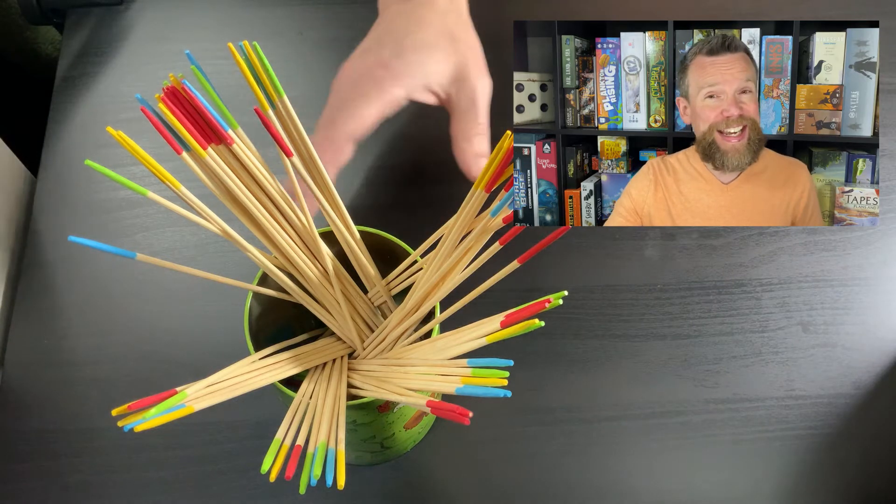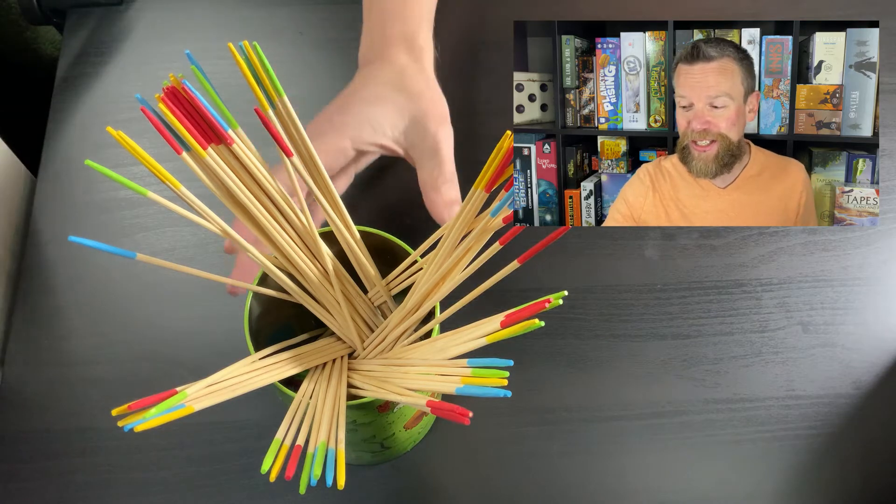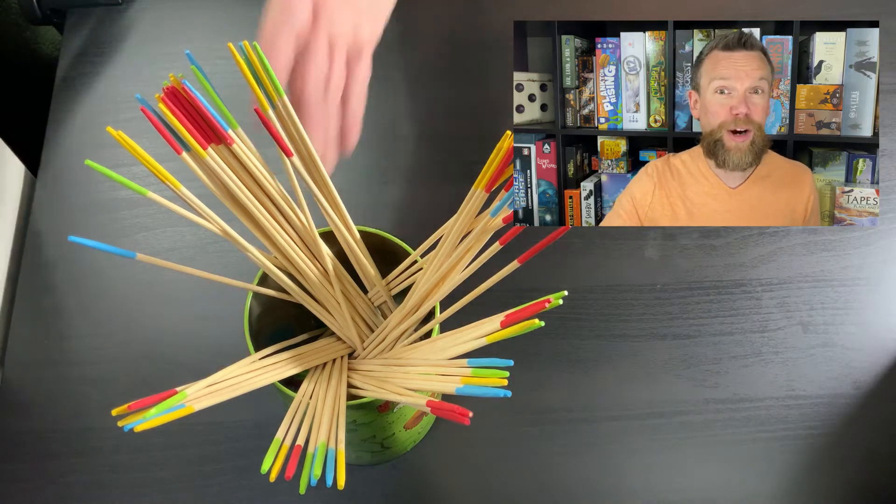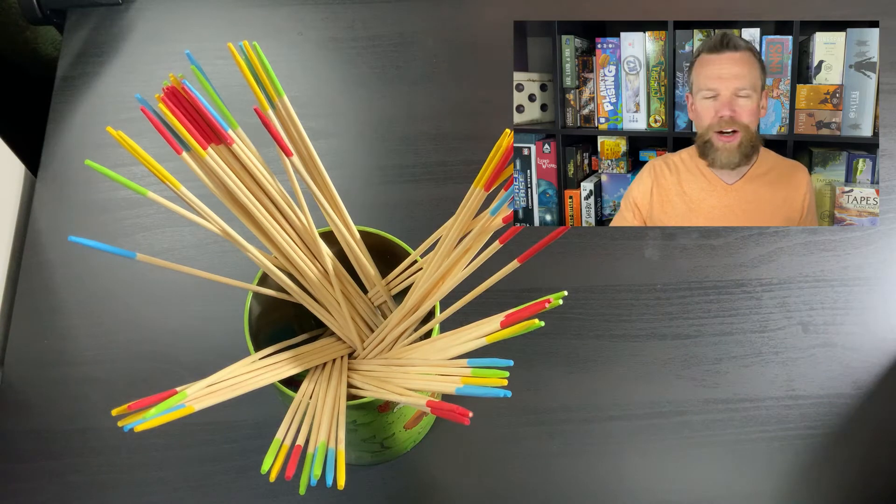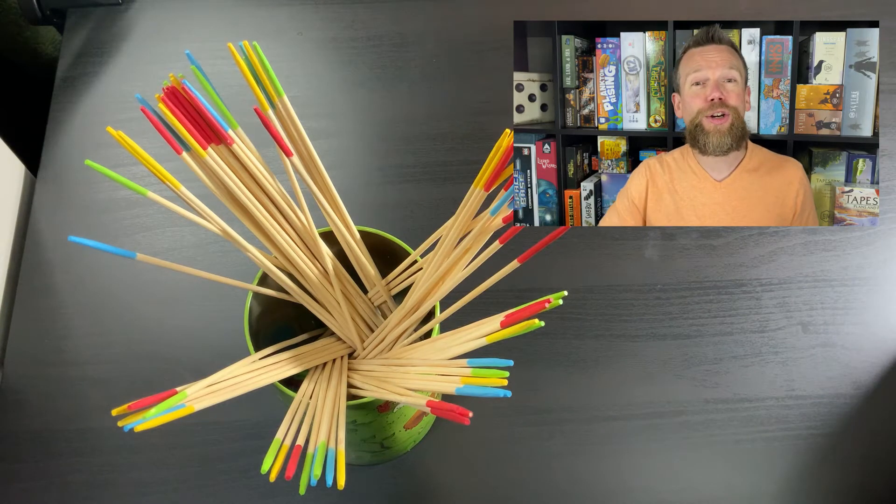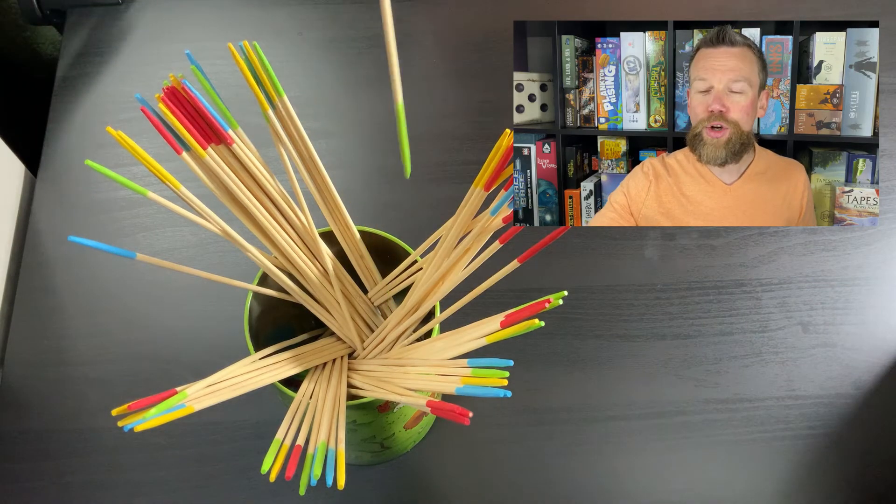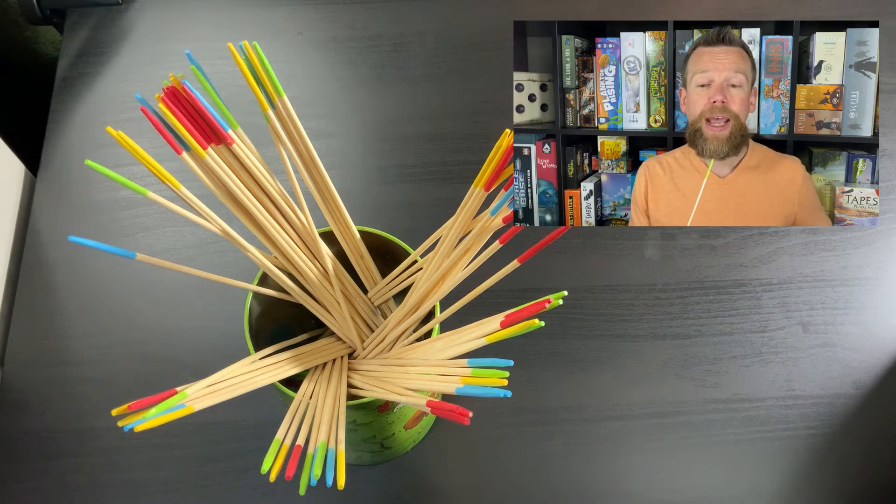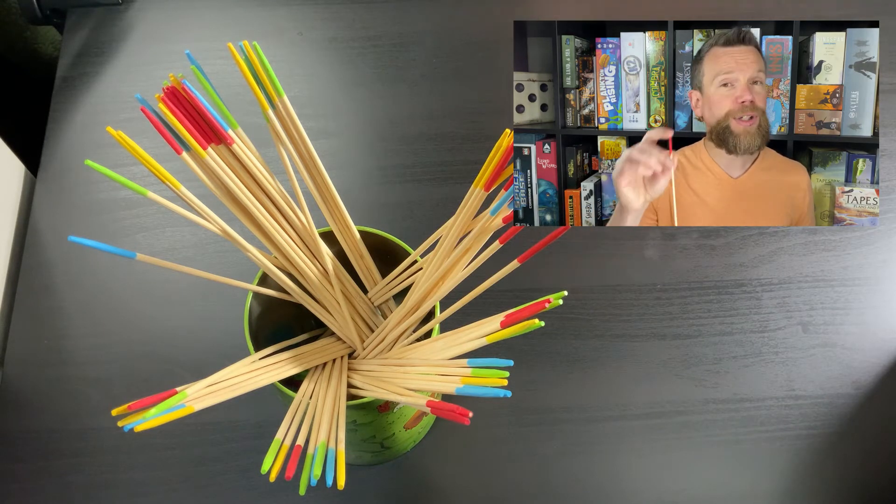You can see here that the box, the tube, the can that the game comes in is also where you play the game. You've got these sticks inside that can with colors on the ends, and on your turn, you are going to pull out one of these sticks. Okay, you can pull out up to three, and they often have different colors on the other side. So, I pulled out a red one.